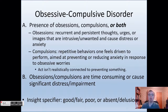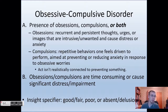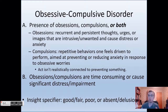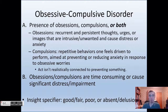A compulsion is a repetitive behavior one feels driven to perform. It's often aimed at preventing or reducing anxiety in response to obsessive worries. The act isn't realistically connected to preventing that worry — for example, if you're worried that not stepping over a crack on the sidewalk will cause a hurricane in Hawaii, that's not a realistic way of preventing a hurricane. There shouldn't be an actual realistic connection between what the person is obsessing over and their compulsion to try and prevent it. Obsessions and compulsions are time-consuming or cause significant distress or impairment — that's the universal criteria. This needs to be at a point where it is impairing somehow.